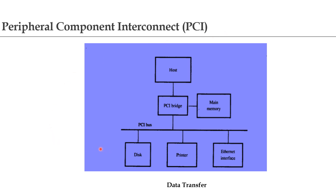When the processor specifies an address and requests a read operation from main memory, the memory responds by sending a sequence of data words starting at that address. Similarly, during a write operation, the processor sends a memory address followed by a sequence of data words to be written in successive memory locations starting at that address. PCI is designed to support this mode of operation and supports three independent address spaces: memory, input/output, and configuration.